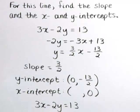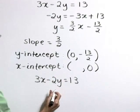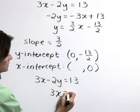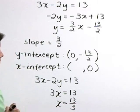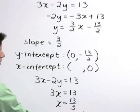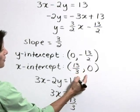Substituting 0 for y makes this term disappear. That gives 3x is equal to 13 or x is equal to 13 thirds. So our x-intercept in coordinate form is 13 thirds, 0.